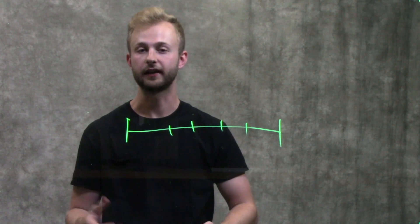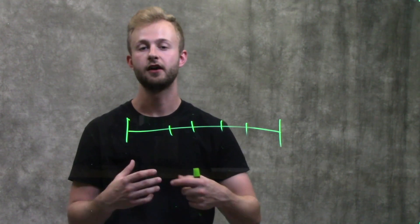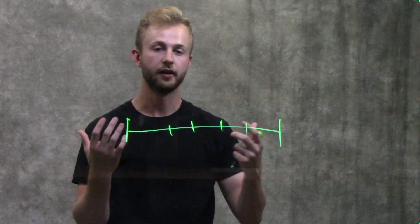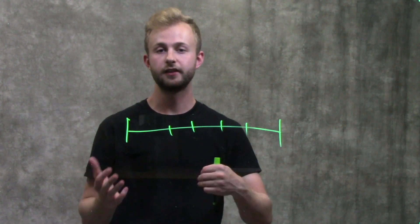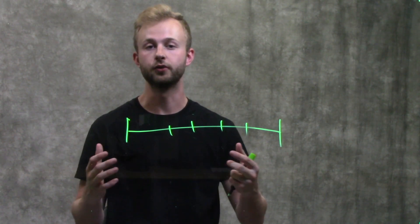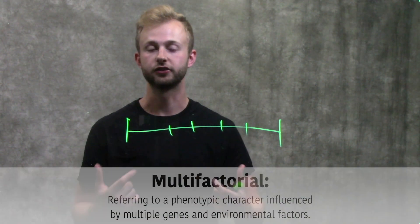our nutrition affects how tall we're going to get, our amount of exercise affects the way our bodies look, our exposure to sunlight is going to affect the color of our skin. So there's a lot of things besides our genotype going into the way that these phenotypes actually show up.